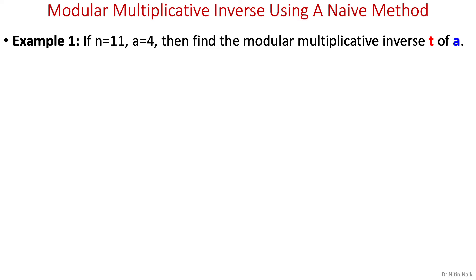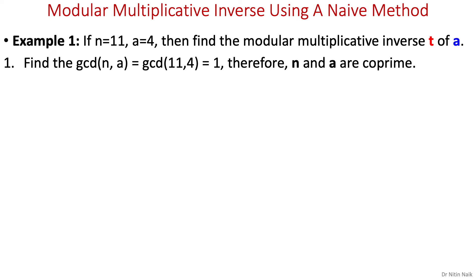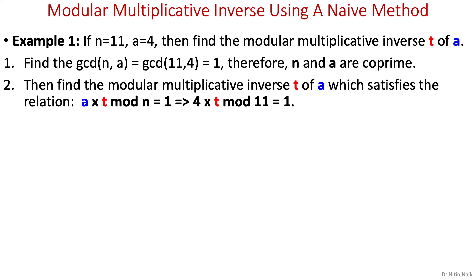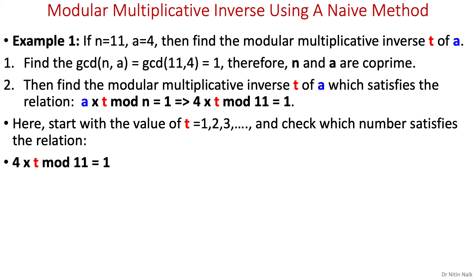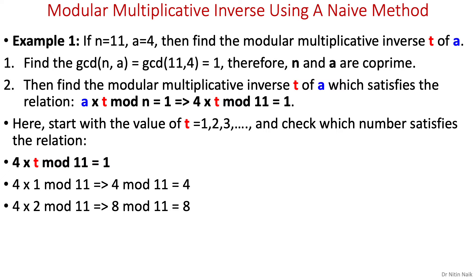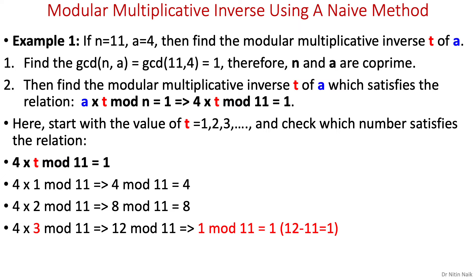In this example, if n equals 11 and a equals 4, find the modular multiplicative inverse t of a. First find the GCD of 11 and 4, which is 1, therefore n and a are co-prime. Then find t satisfying a times t mod n equals 1. Starting with t equals 1: 4 times 1 mod 11 is 4. For t equals 2: 4 times 2 mod 11 equals 8. For t equals 3: 4 times 3 mod 11 equals 1. So t equals 3 is the modular multiplicative inverse.